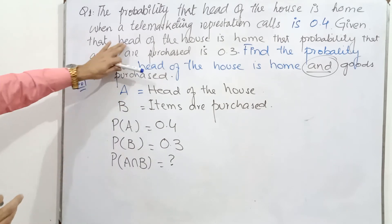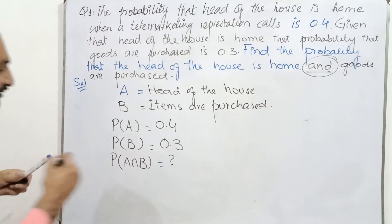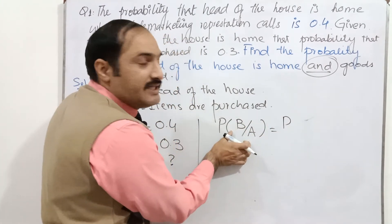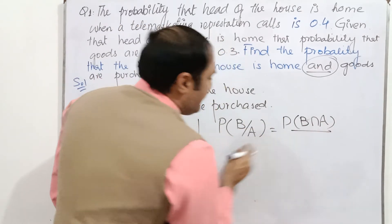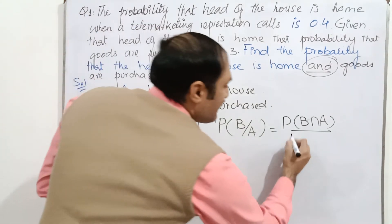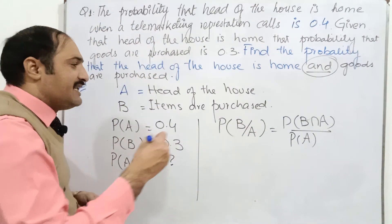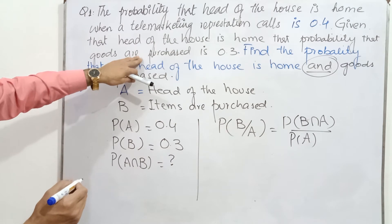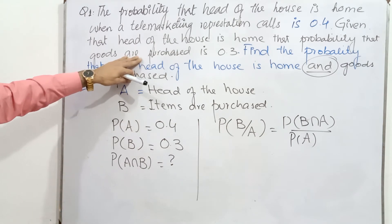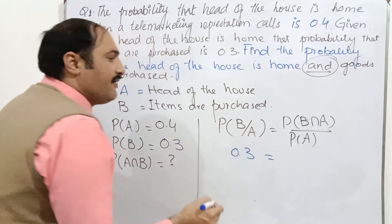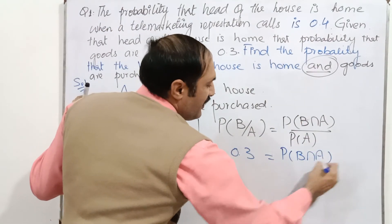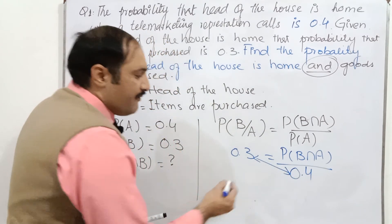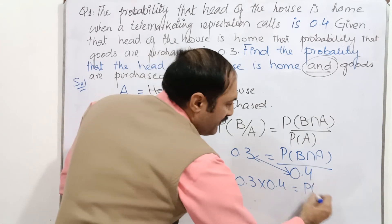So here, the given probability is that the head of the house is home. We can say that probability of B given A is equal to 0.3, and by the conditional probability formula: P(B|A) equals P(B ∩ A) over P(A), where P(A) is 0.4.